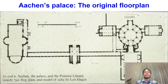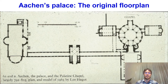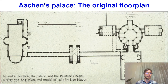The original floor plan supposedly looks like this—this is the reconstruction. The church of St. Mary was located here, with two other churches flanking it. There was a rectangular atrium in front of it, and a corridor connected the whole complex of three churches with Charlemagne's actual palace.